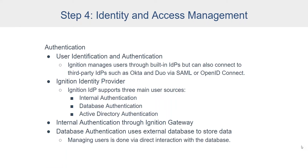Internal authentication is kind of the default — you manage all the users and roles inside Ignition directly. It can be really handy and useful, but it starts to break down when you have multiple gateways across your network and you want them all to share users that sign in without managing users separately on each gateway. So you can look at other options. Database authentication uses an external database to store user management data, and that database can be connected to multiple Ignition gateways — giving you a single spot to manage users across your network.